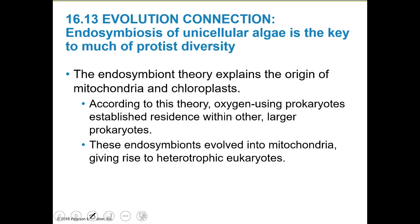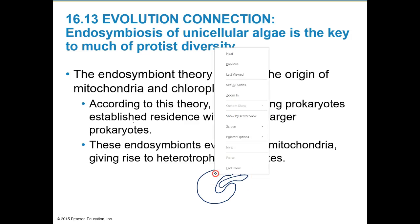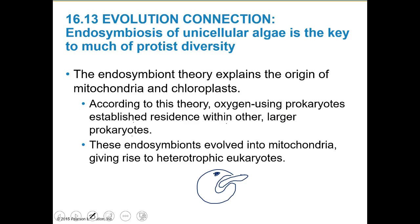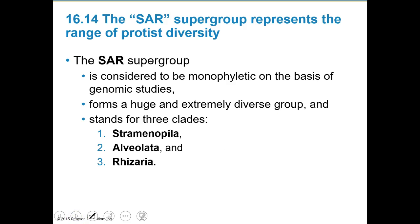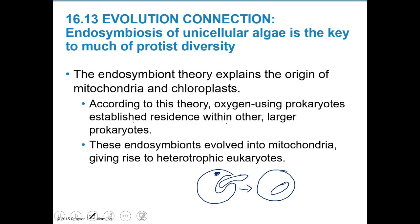Before diving into classification, it's worth discussing the endosymbiont theory, which explains the origin of mitochondria and chloroplasts. According to the theory, oxygen-using prokaryotes established residence within one larger prokaryote — essentially a eukaryote engulfed a prokaryote in a Pac-Man-like situation, and that piece was incorporated into the host. That's the endosymbiont theory: a prokaryote was engulfed and became part of the eukaryote, giving rise to heterotrophic eukaryotes.